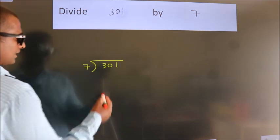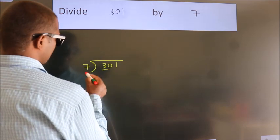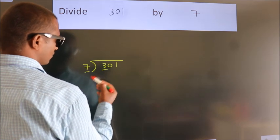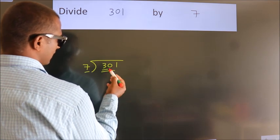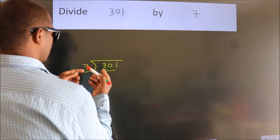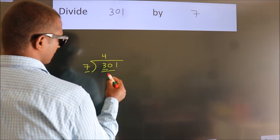Next, here we have 3. Here 7. 3 is smaller than 7, so we should take 2 numbers: 30. A number close to 30 in the 7 table is 7 fours, which is 28.